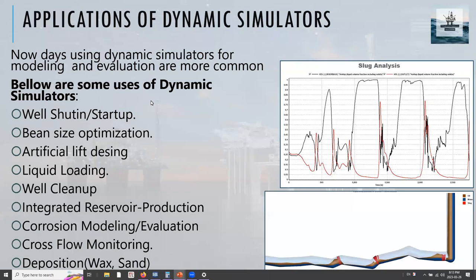One of the most important uses of dynamic simulators like OLGA is bean size optimization, also known as bean-up and bean-down strategies. The choke size is dependent on a lot of variables in the oil and gas field. One of the most important parameters that bean size optimization is based on is the reservoir pressure itself. The change in reservoir pressure with time will help you determine what's the best bean-up and bean-down strategies during the different life of the well and when you achieve those targets time-wise.